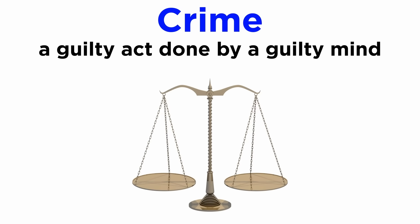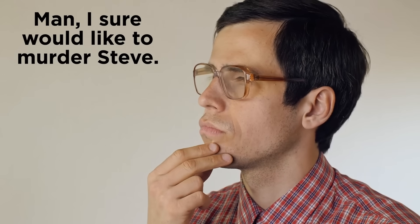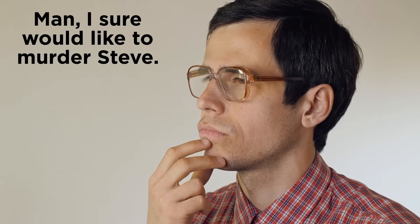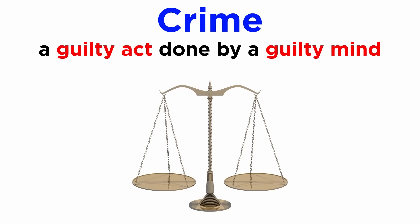To put it simply, crime is a guilty act — actus reus — or the act of doing something criminal which is against the law, done by a guilty mind — mens rea — or the intention of doing something criminal. Thus, these are the two elements of a crime. It is not a crime to merely have guilty thoughts; those guilty thoughts must be linked to a guilty act. Both must be present simultaneously, or a crime is not committed.